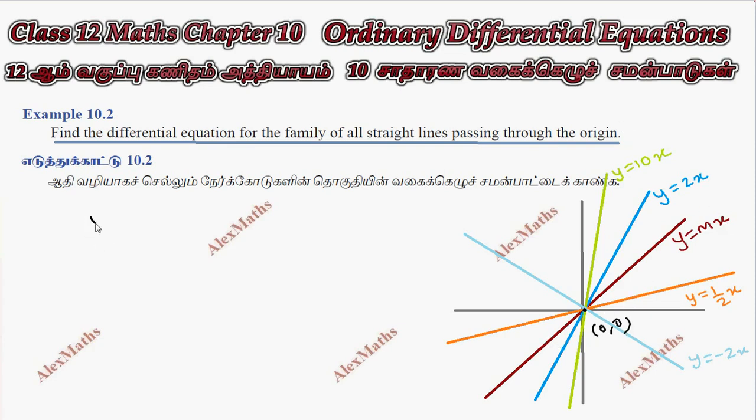To find the differential equation, this is equation number 1. This contains the constant m. To eliminate the constant, we differentiate. So dy by dx equals m.